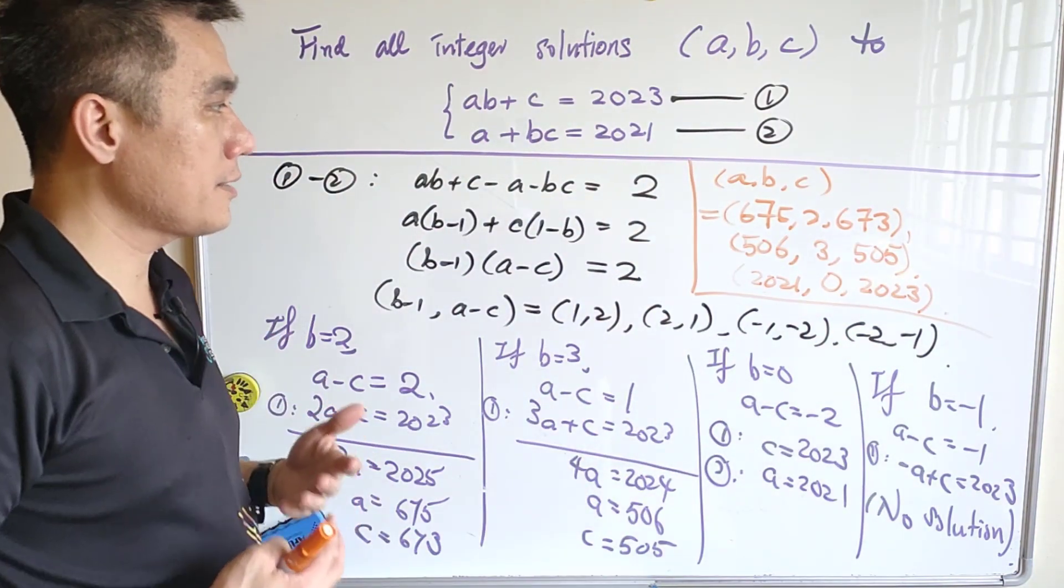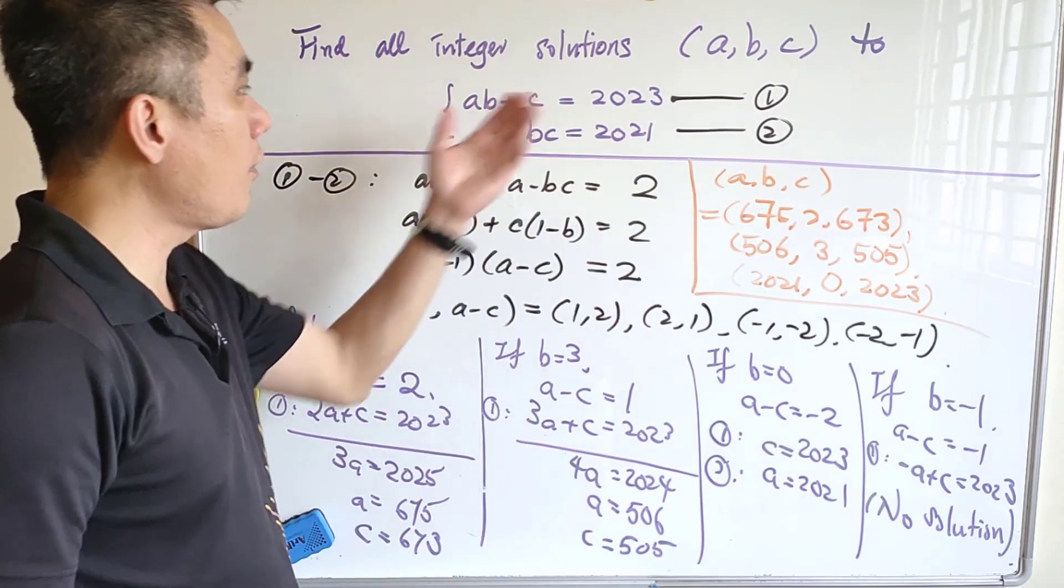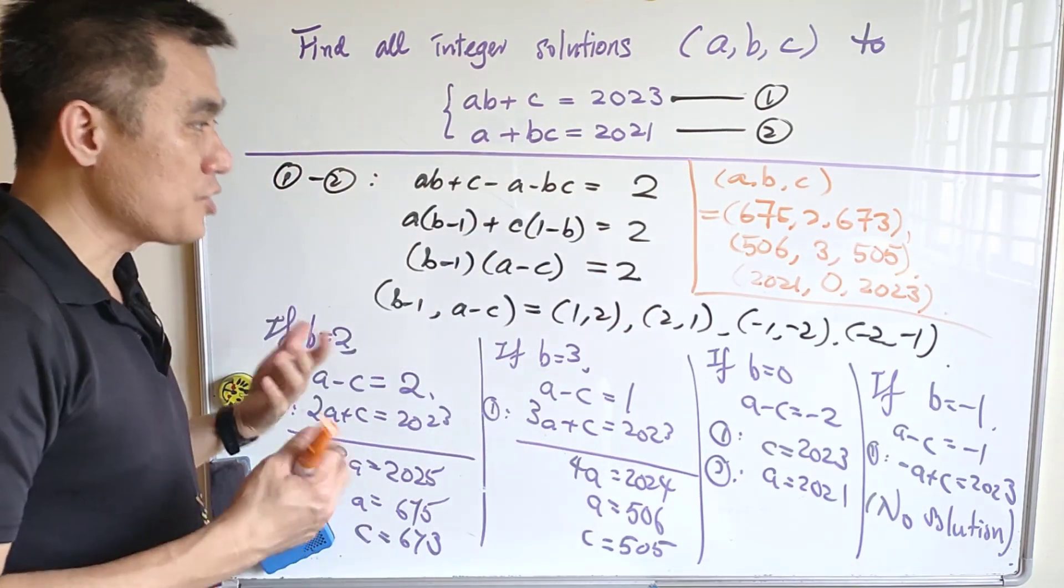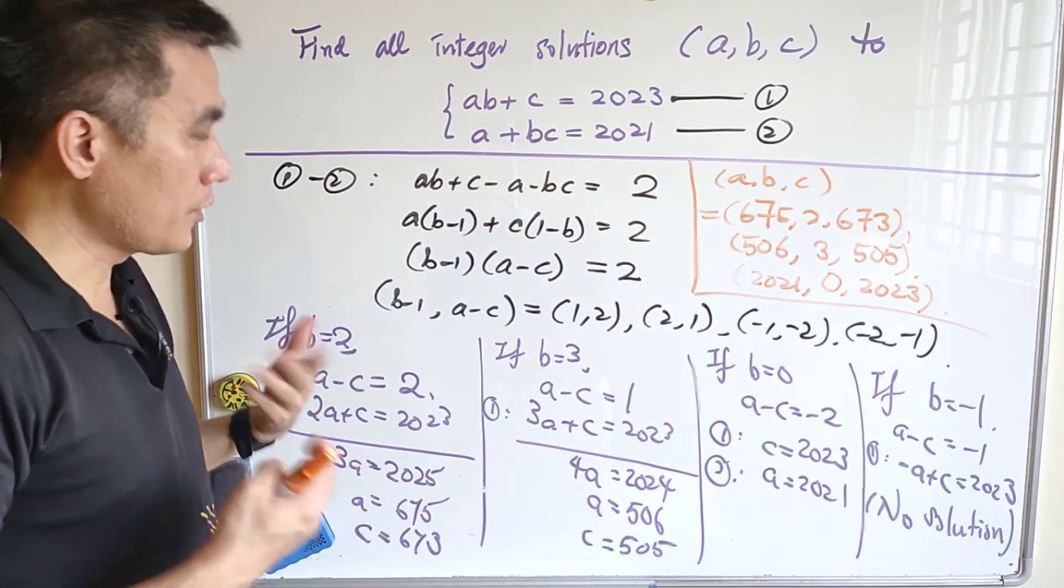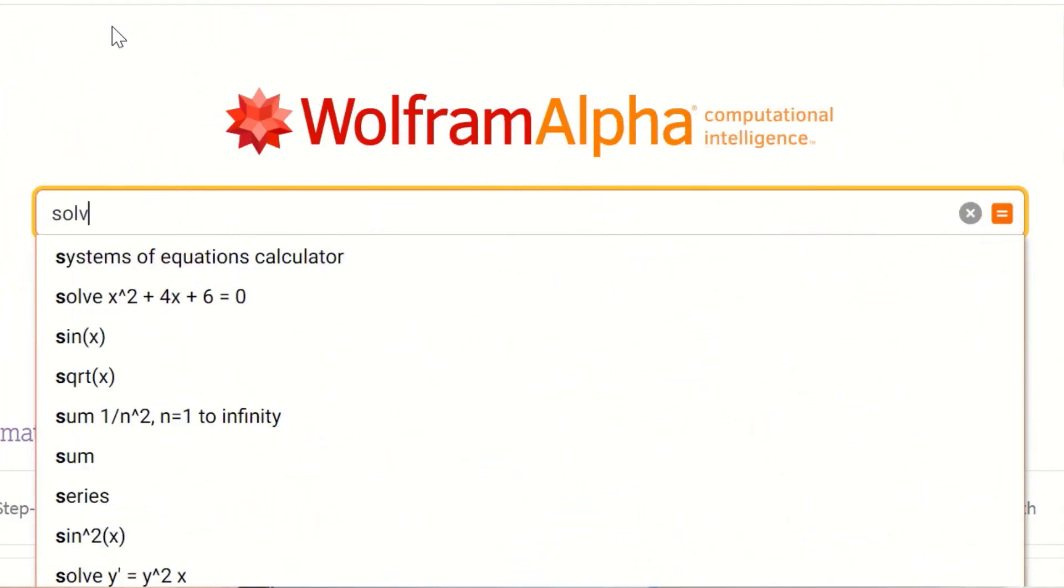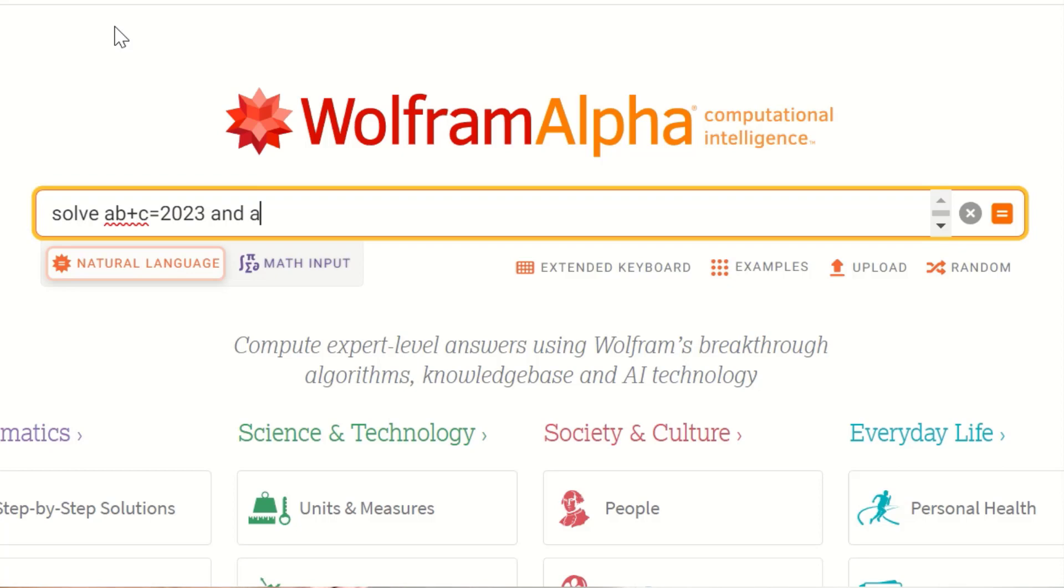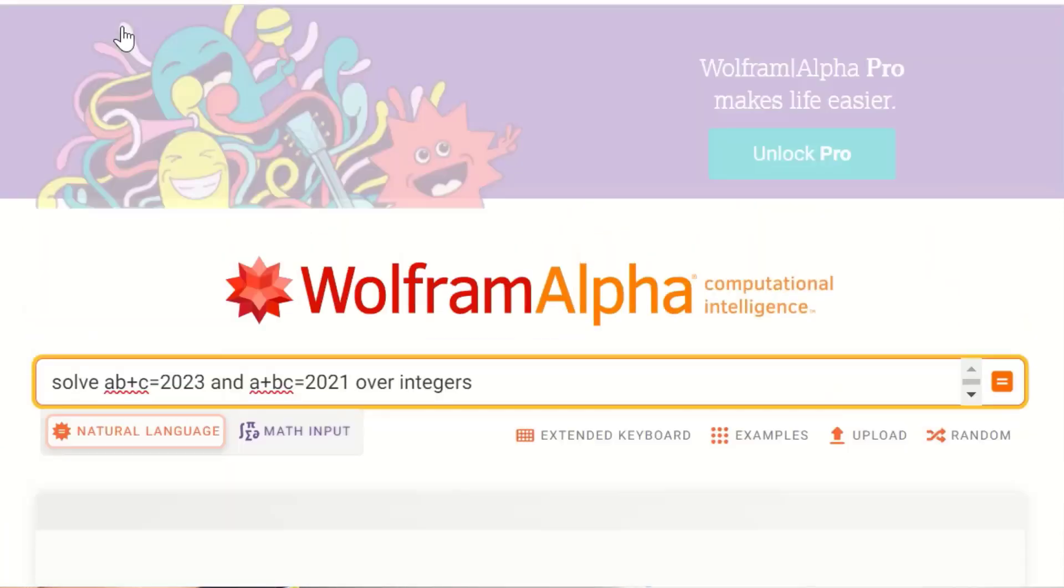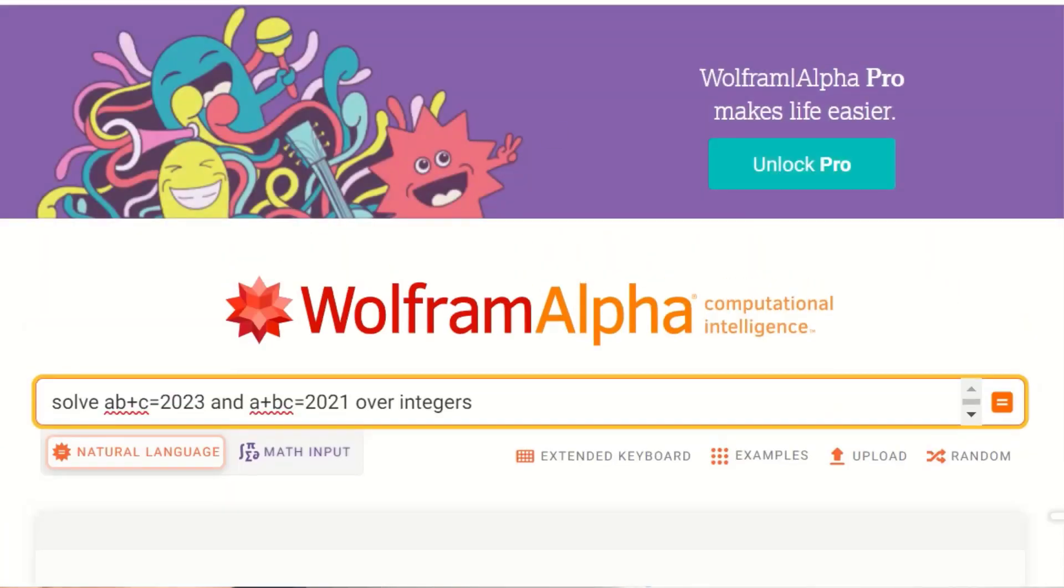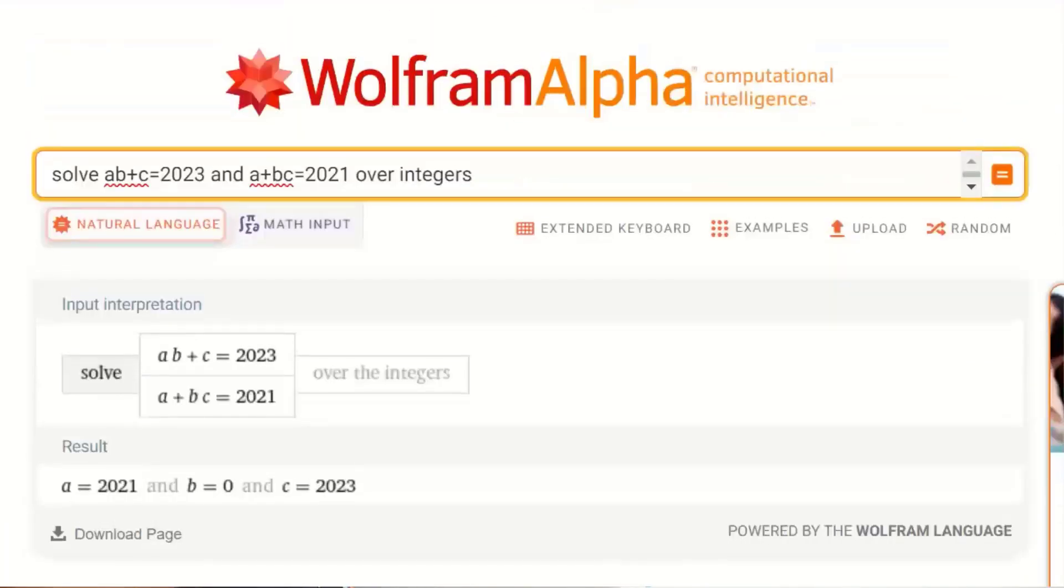It is my habit to check whether these are all the solutions. I checked through and they are all correct. However, when I check using Wolfram Alpha, it only gives me one solution. So I'm not quite sure whether anything wrong with the program or anything wrong with my input. If you know why, please let me know in the comment.